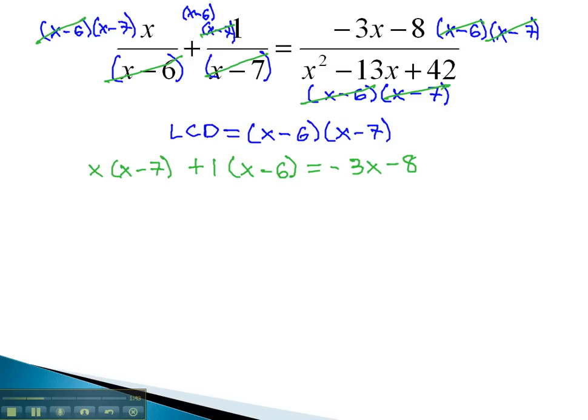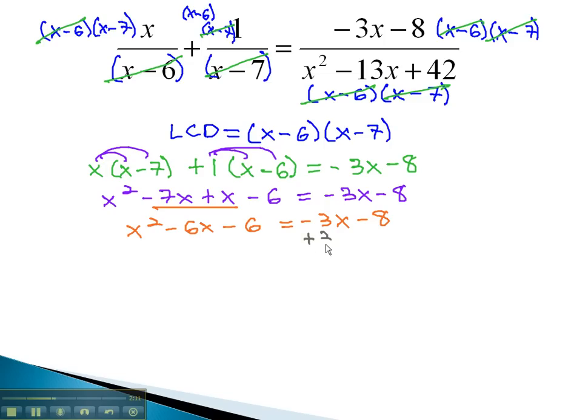We can now start solving this equation by distributing through the parentheses. x squared minus 7x plus x minus 6 equals negative 3x minus 8. Combining like terms, we get x squared minus 6x minus 6 equals negative 3x minus 8. To continue solving, we'll make it equal to 0 and see if we can factor. We'll add 3x and 8 to both sides. This gives us x squared minus 3x plus 2 equals 0.